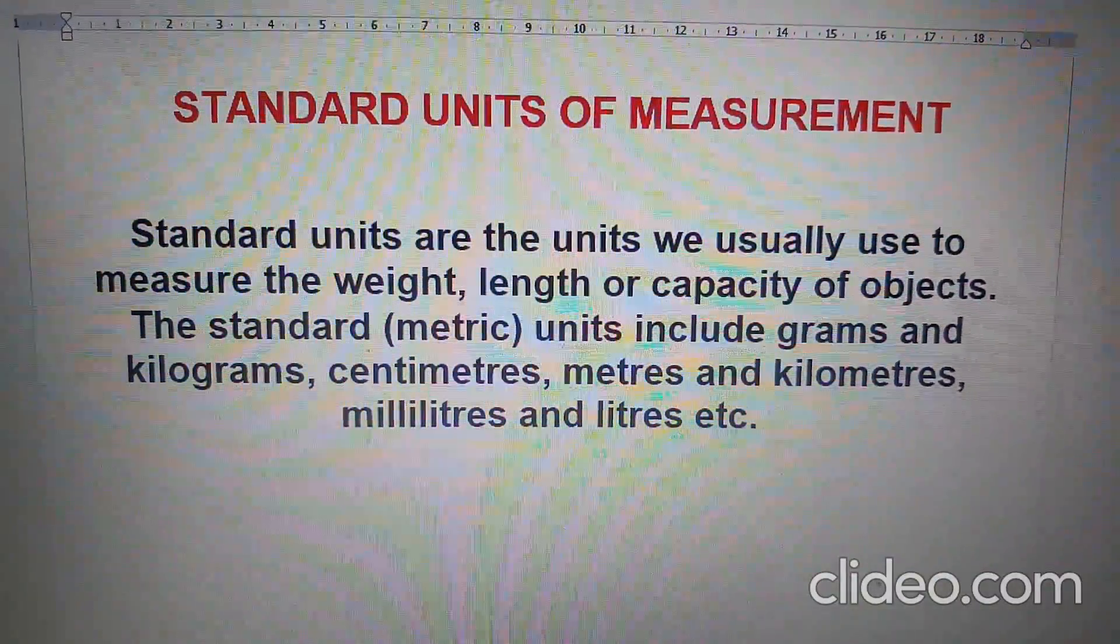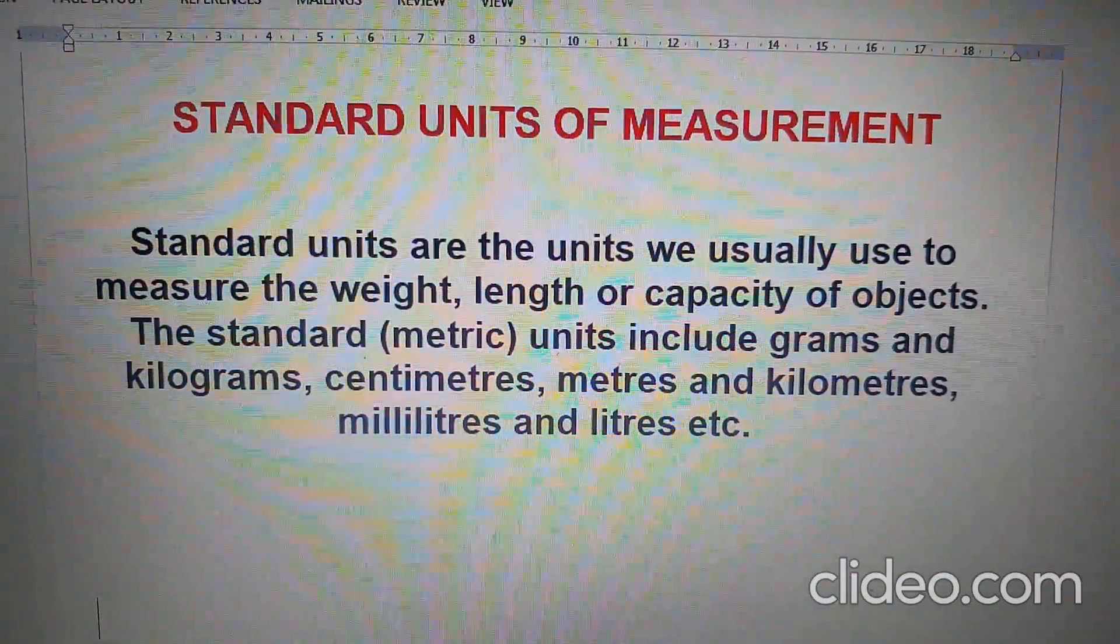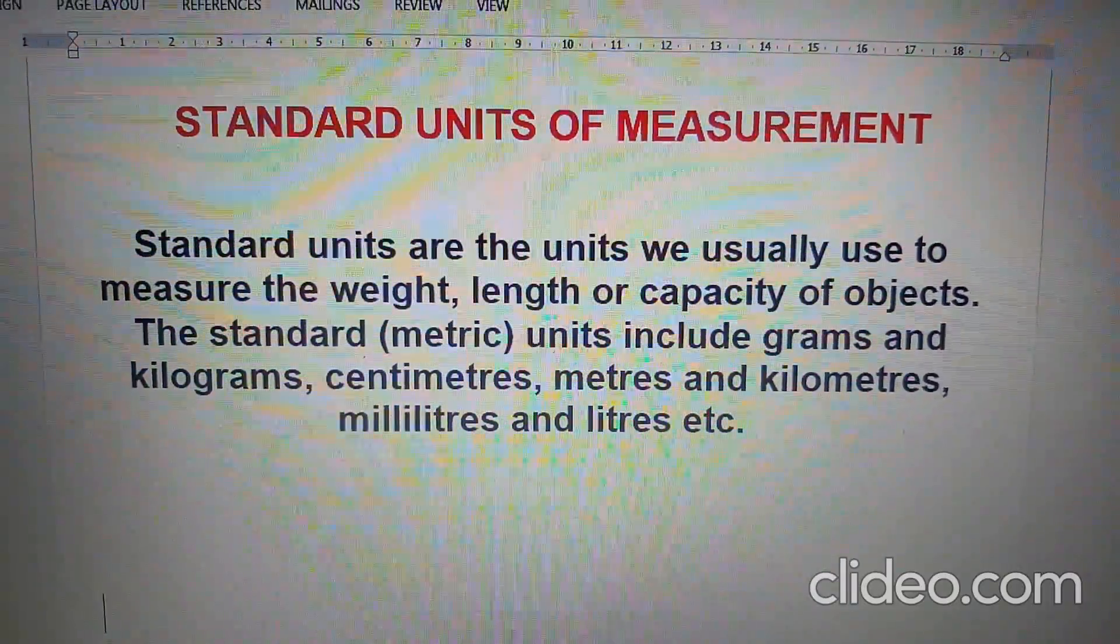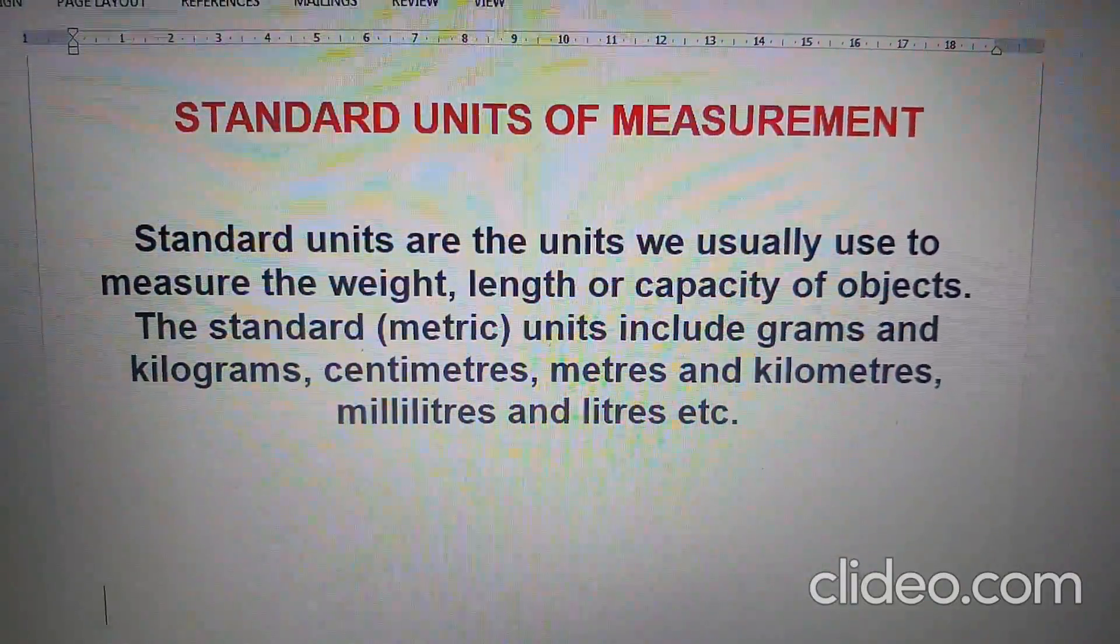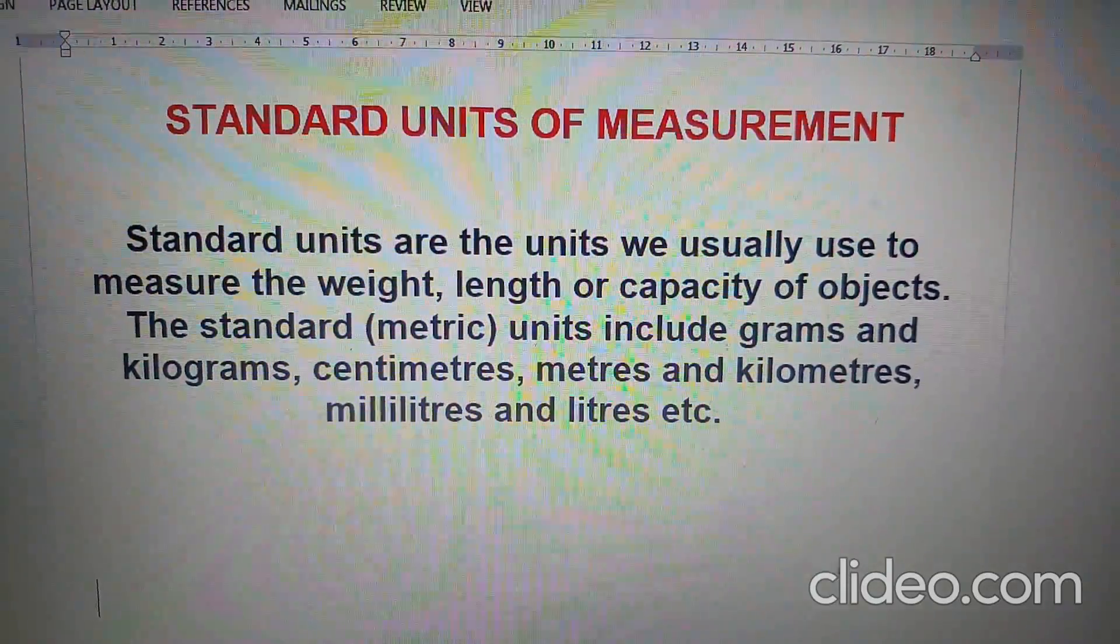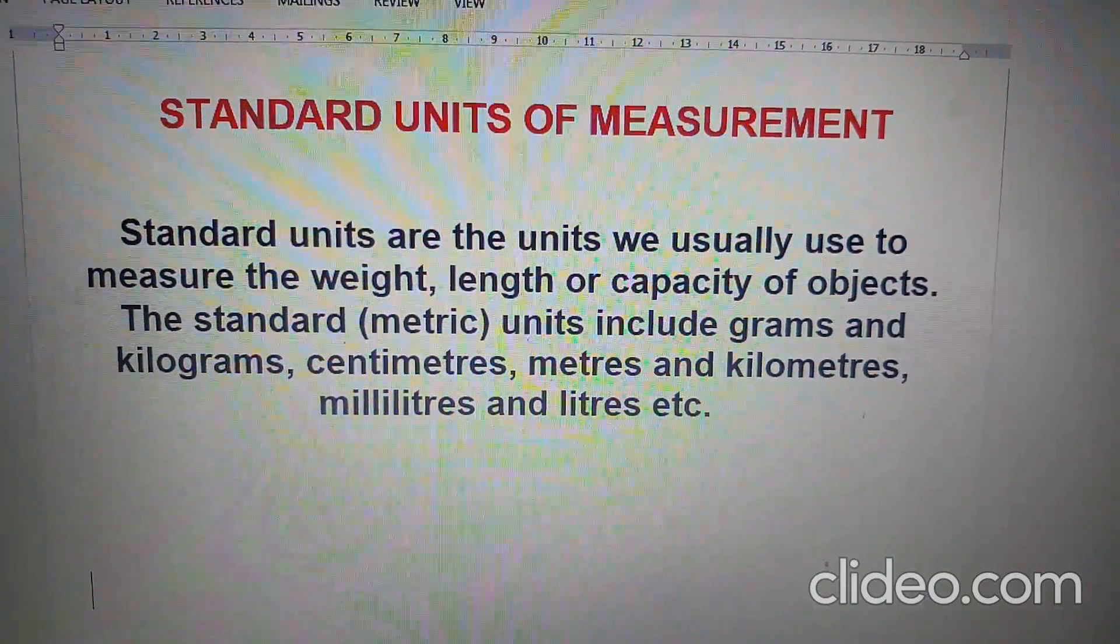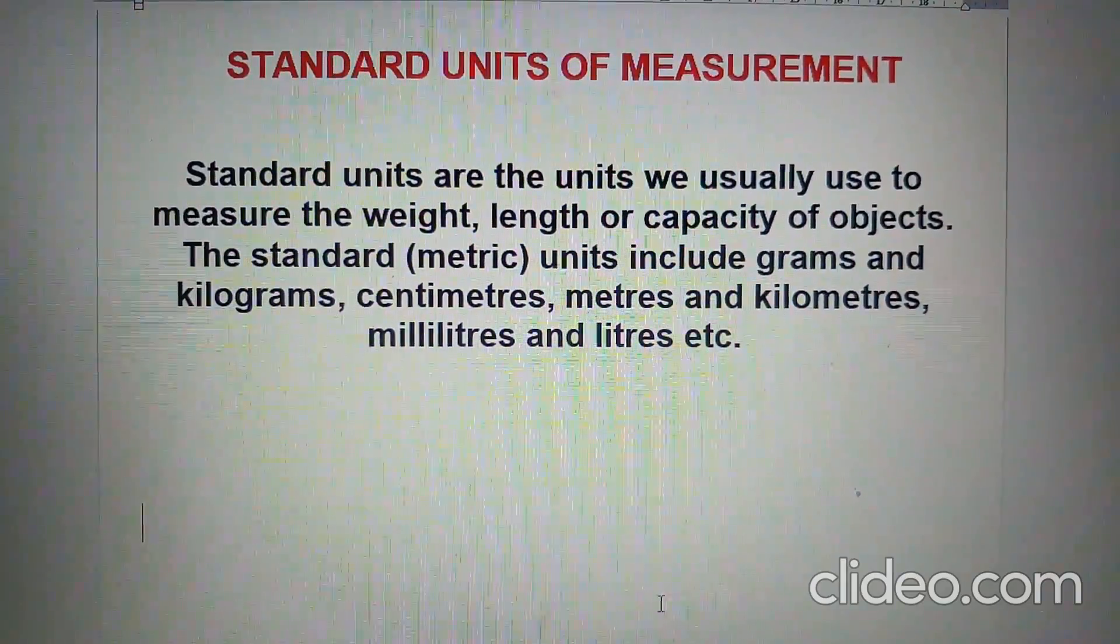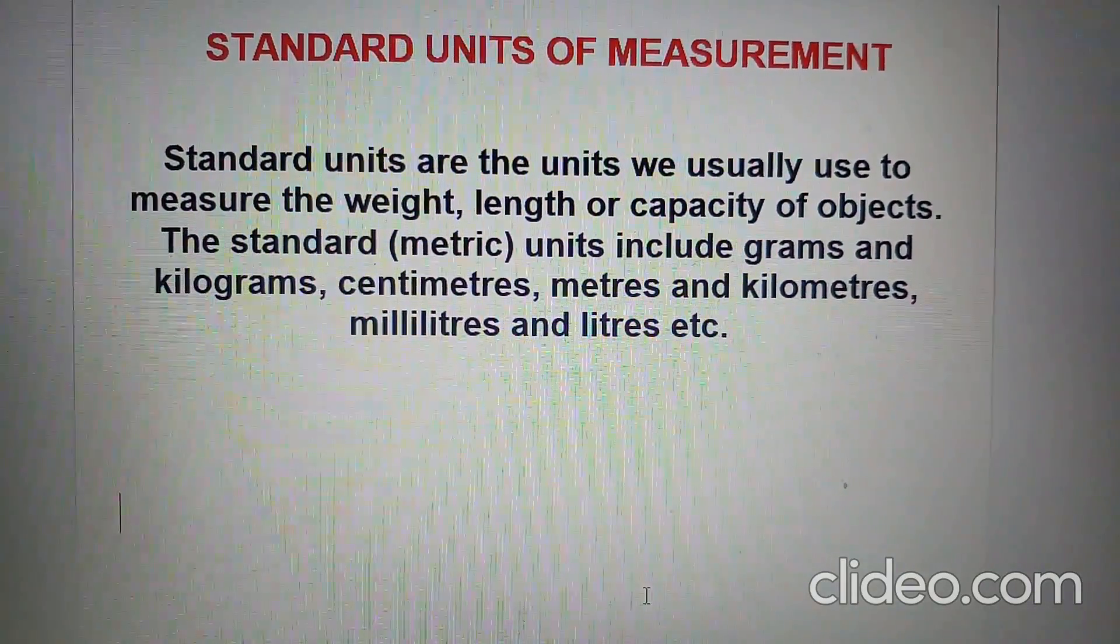Grams and kilograms, centimeters, meters and kilometers, milliliters and liters are the units we usually use to measure the weight, length, and capacity of objects. These are called standard units of measurement. For the sake of uniformity, standard instruments are used to quantify things.